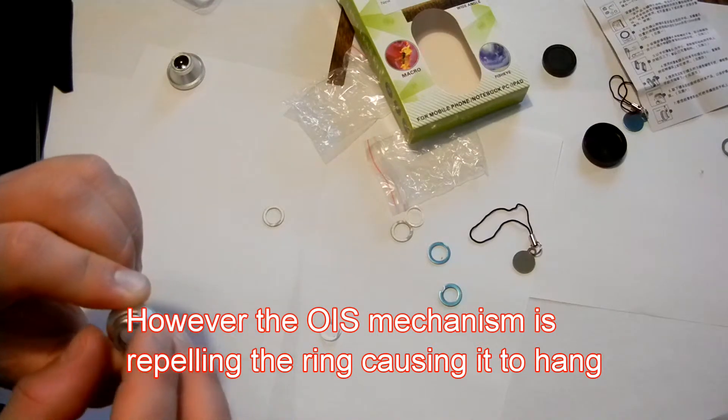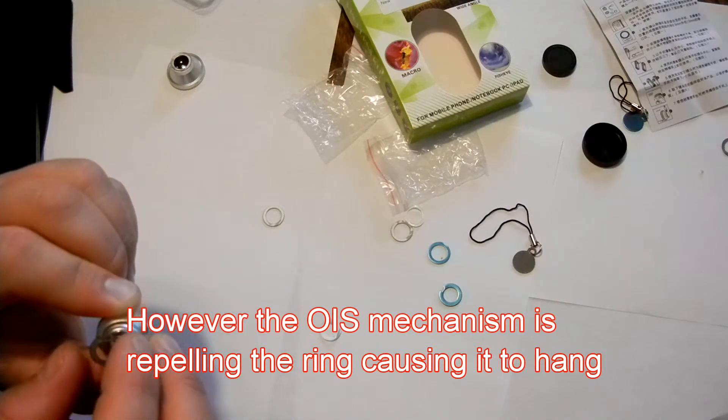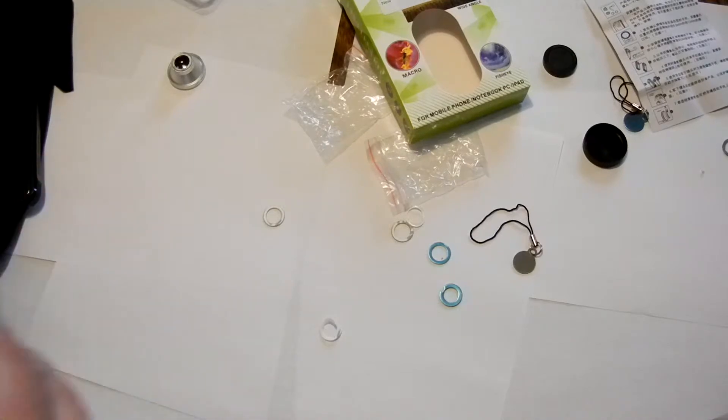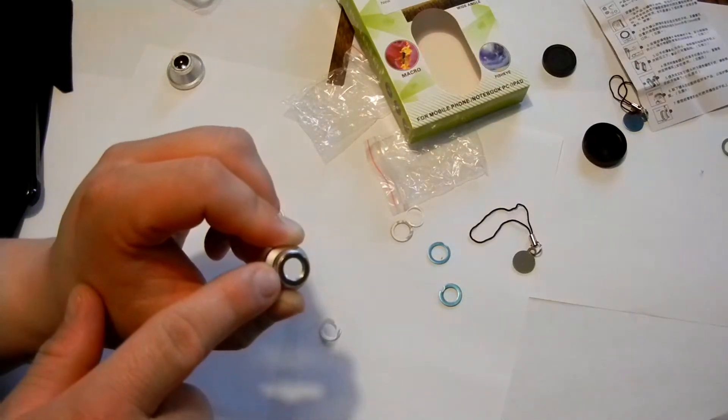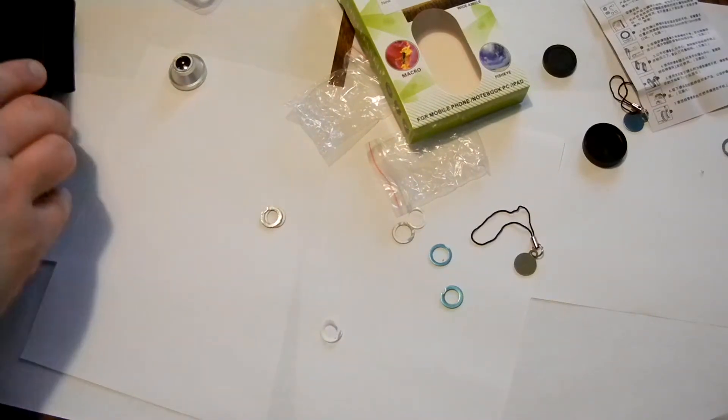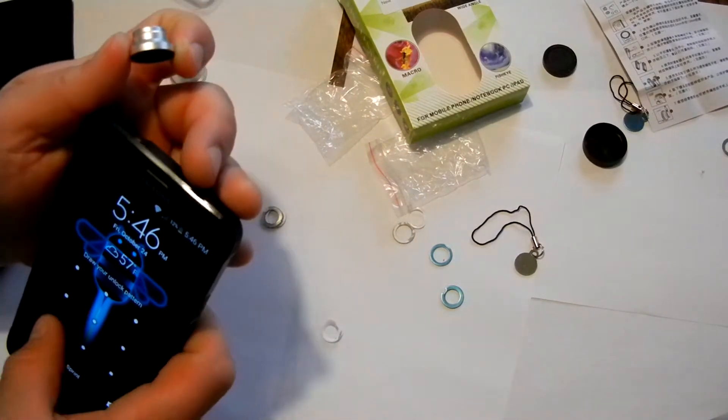The magnet portion is actually on the inside where the actual lens is. This portion right here, in fact I'm going to go ahead and take this off right here. So the rings themselves are not in any way magnetic. This portion right here is magnetic.